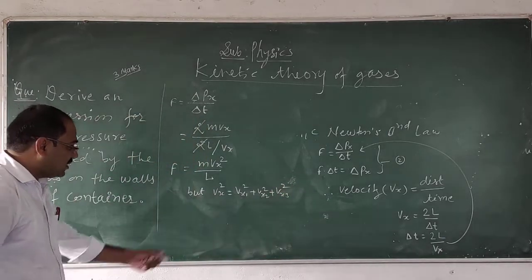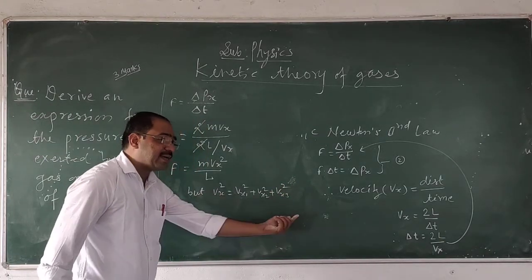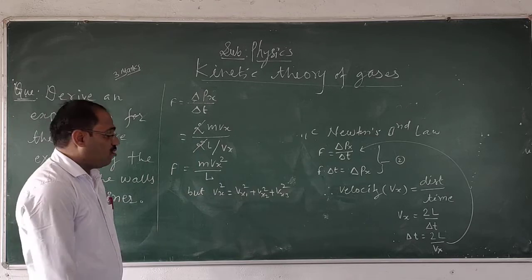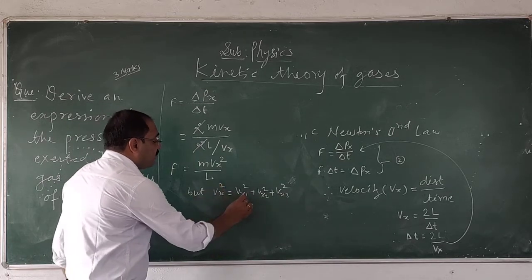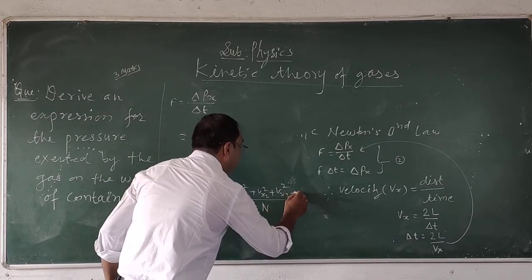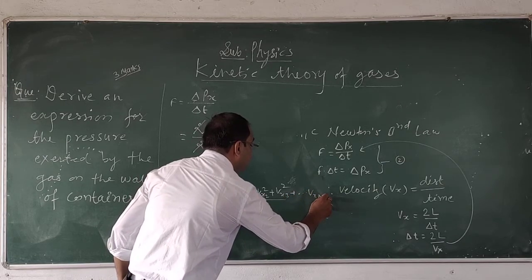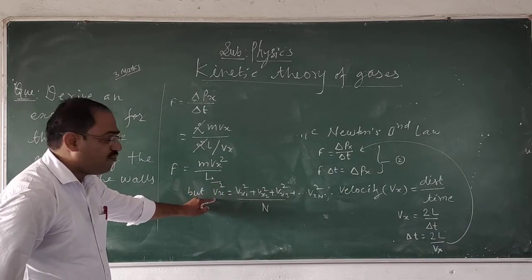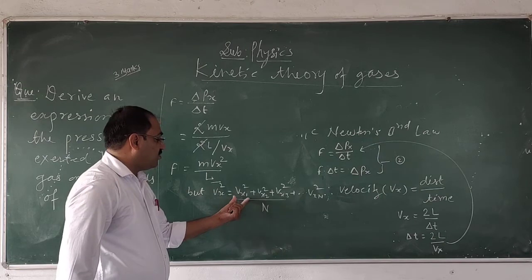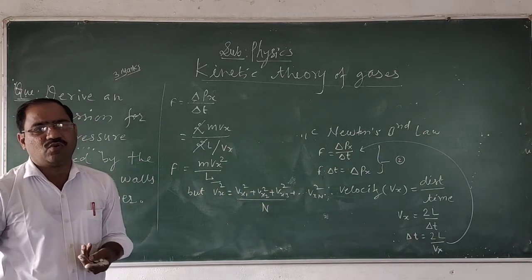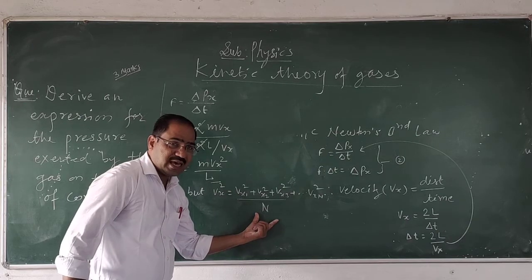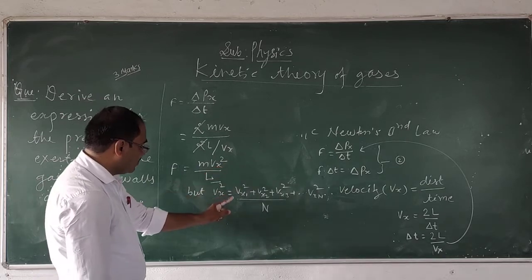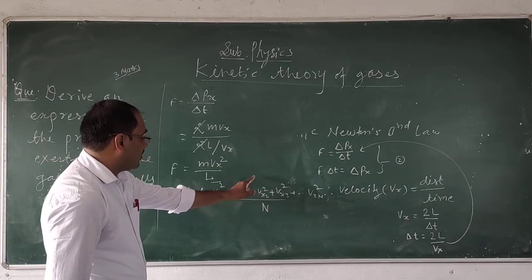Here V squared is equal to Vx1 squared plus Vx2 squared plus Vx3 squared plus Vx4 squared — the mean of Vx1, Vx2, Vx3, Vx4 for number of particles N. In order to find the mean Vx squared, that is Vx1 squared.